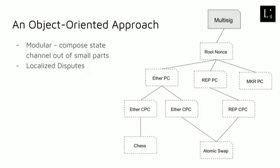This approach also lets us have really localized properties — for example, localized disputes. In this state channel example we have an Ether payment channel, a payment channel for Augur reputation tokens, and a payment channel for Maker tokens. We also have a game of chess being played where the winner gets the Ether, and an atomic swap application which means these two people can trade Ether for Augur reputation tokens trustlessly inside the state channel. Localized disputes means that if we have a dispute about chess, we can bring it on-chain, but if there's no dispute about atomic swap, we only need to put the chess contracts on-chain — we don't need to put the atomic swap contract on-chain. That comes out of the localized property of the object-oriented approach.